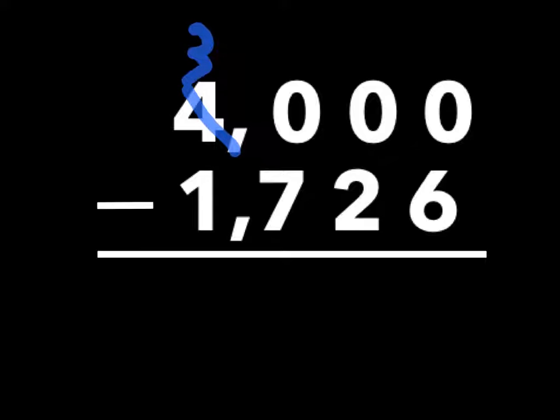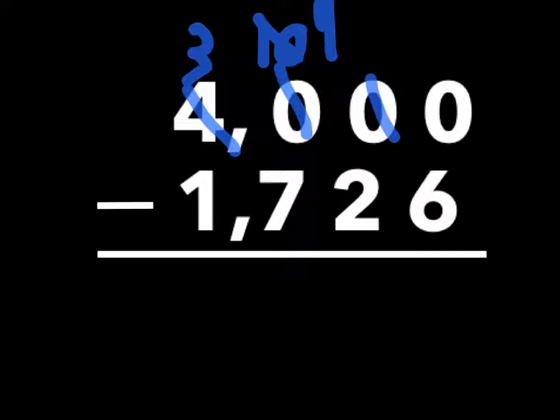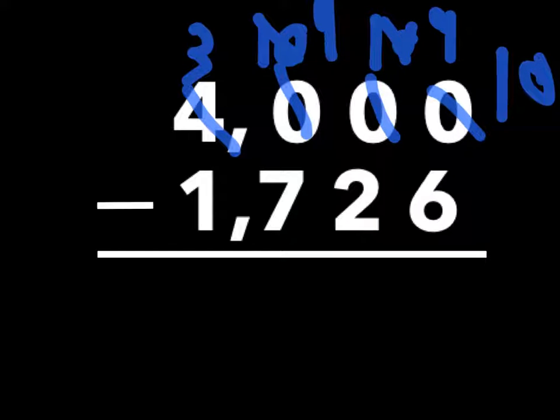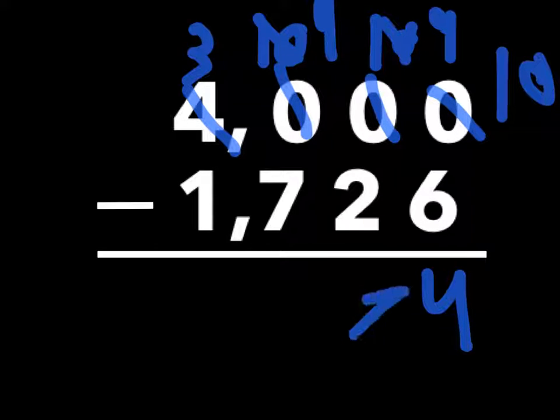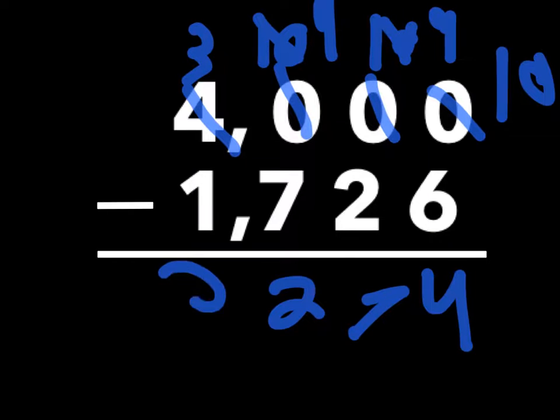4,000 minus 1,726. We're going to have to give some stuff away, so we're going to give that 10, but then we're going to have 9, then we're going to give this 10, but then add 9, then this is 10, so 10 minus 6 is 4, that's 7, this is 2, and this is 2.